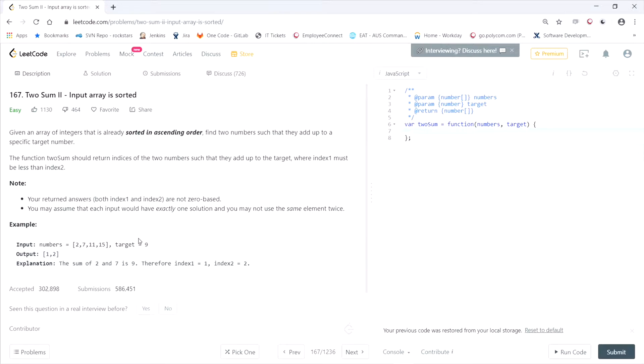So what they're saying is that two elements in the array have to add up to the target. You would return their index, but not the index, the index plus one. So let's say the indices that add up to the target are zero and one, you would return one plus two. So let's look at the example. The input array is two, seven, eleven, fifteen, and the target is nine. And the output is one, two, because the elements that add up to the target are the first element and the second element, one and two.